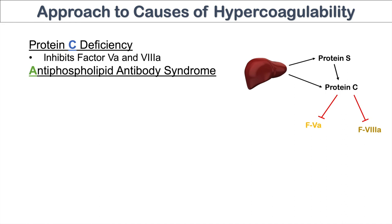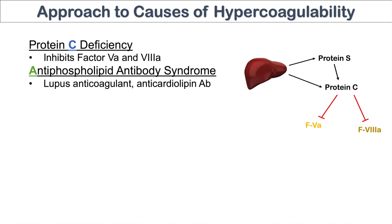The next cause is antiphospholipid antibody syndrome. The issue here is lupus anticoagulant and anticardiolipin antibody. The lupus anticoagulant is a misnomer — it is an anticoagulant in vitro, but in vivo it is a coagulant; it increases coagulation. Both lupus anticoagulant and anticardiolipin antibody increase coagulation.